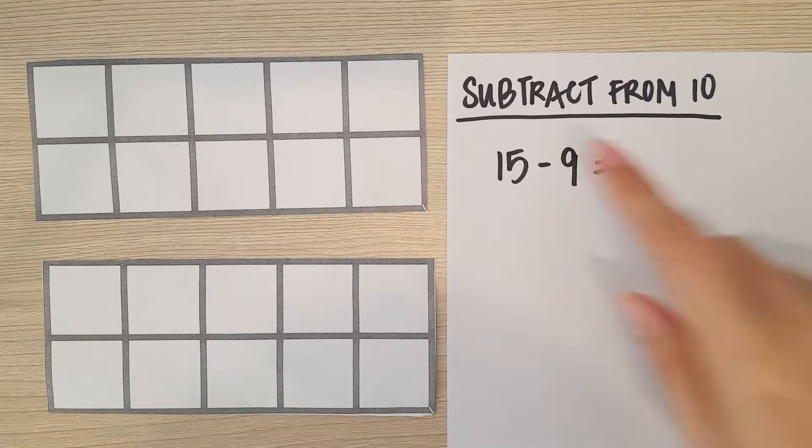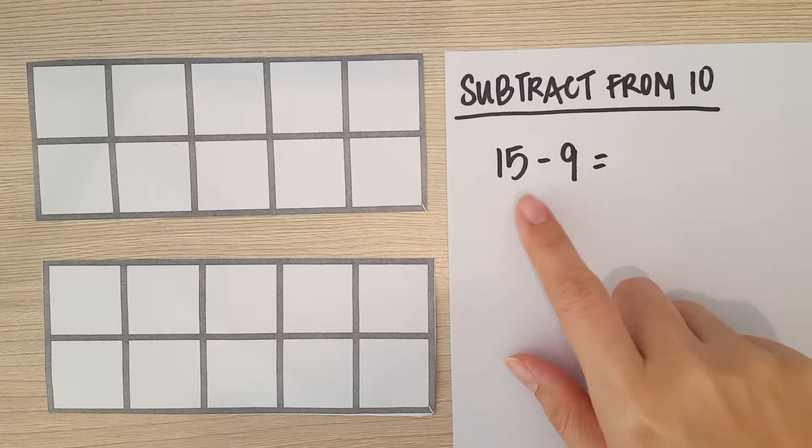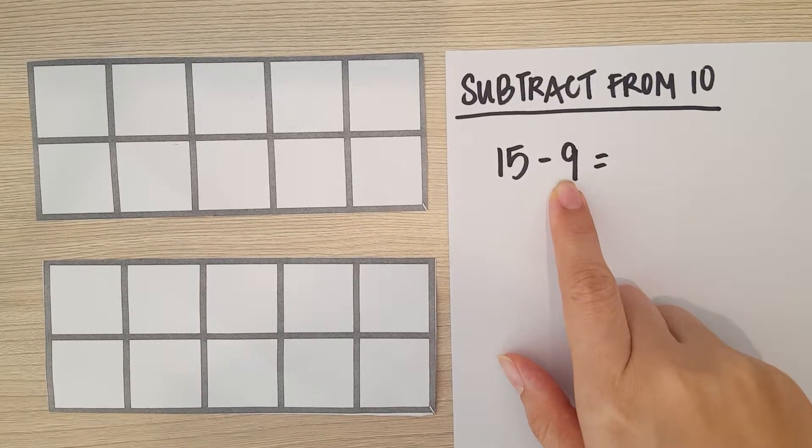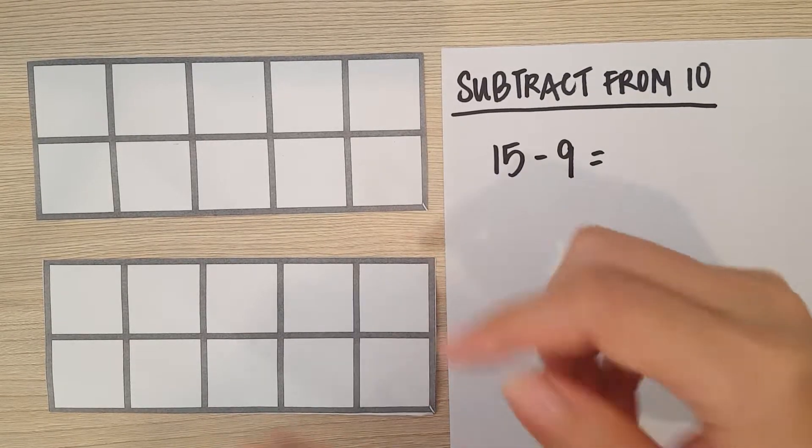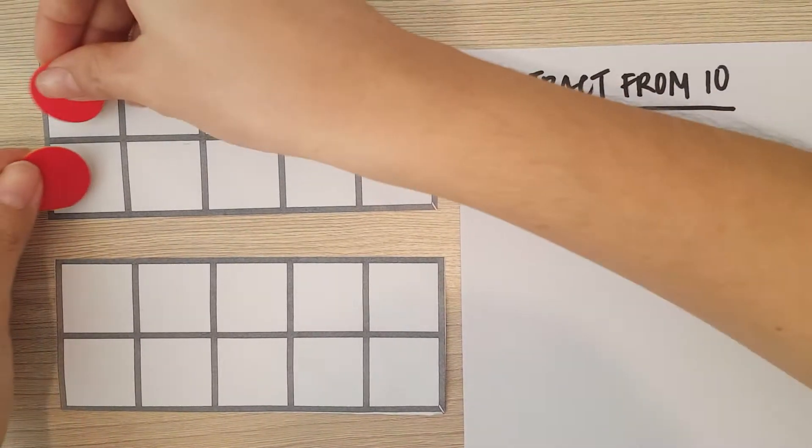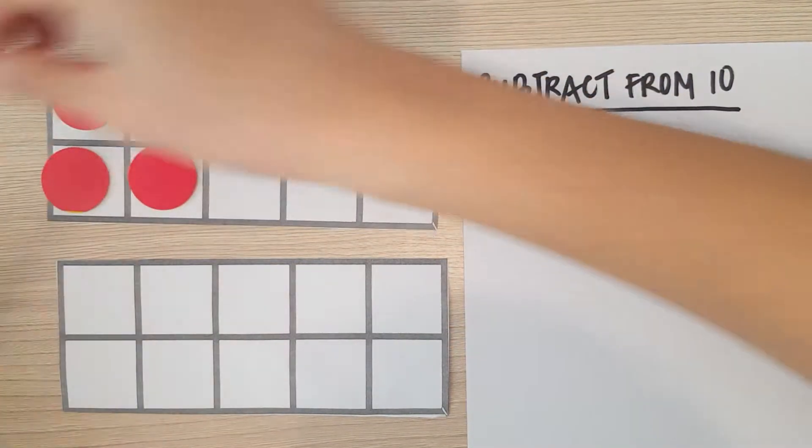So let's try a new method: subtract from 10. First, when we subtract, we are going to take away from 15. I'm going to put 15 counters here on my two ten frames. 15 is made up of 10, which I have here—10...